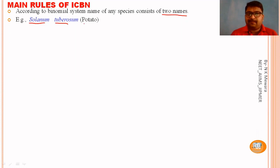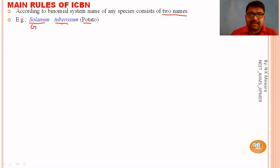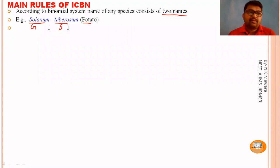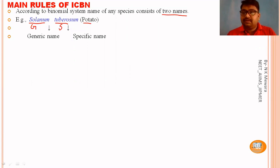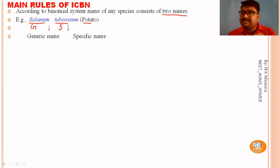For example, Solanum tuberosum is a scientific name. The first name, Solanum, indicates the genus (generic name), and the second name, tuberosum, indicates the species (specific name).